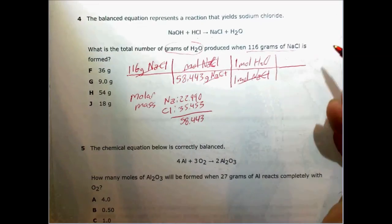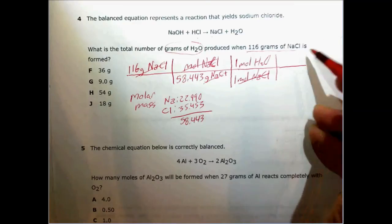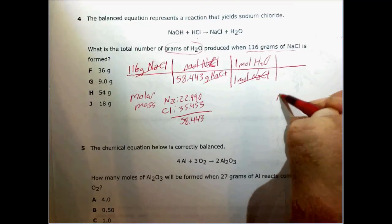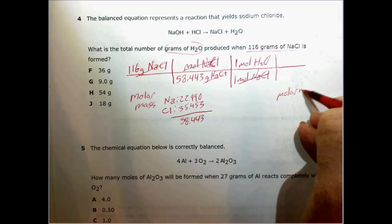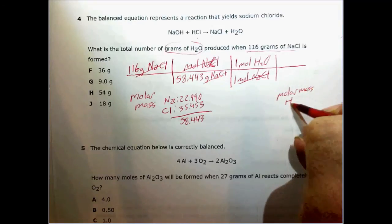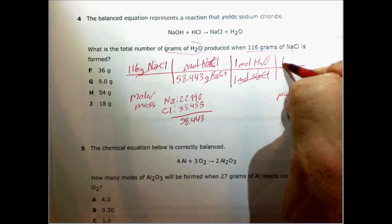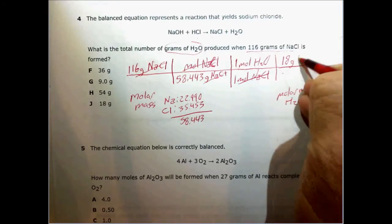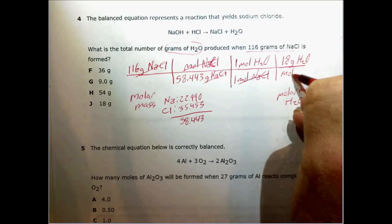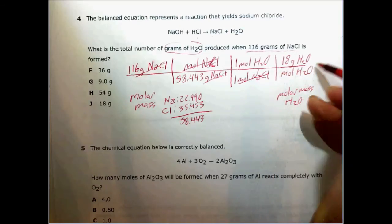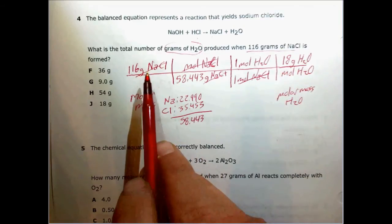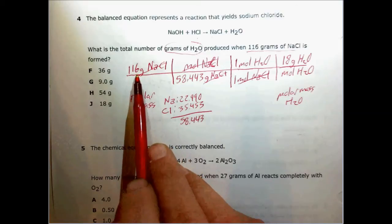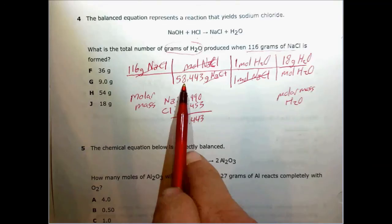The last thing I need to do is multiply by the molar mass of water. And that is about 18 grams of H2O for every mole of H2O. Now all I need to do is carry out my multiplication and division. 116 grams divided by 58.443 grams.